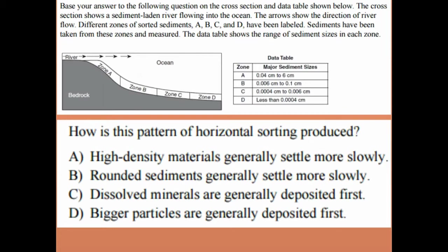Here's a practice question: a river is entering the ocean, and a data table shows zones A, B, C, and D with their major sediment sizes. The sizes get smaller from zone A to zone D — zone A has the largest particles, zone D has the smallest. How is this horizontal sorting pattern produced? The correct answer is: bigger particles are generally deposited first — whether in vertical or horizontal sorting.